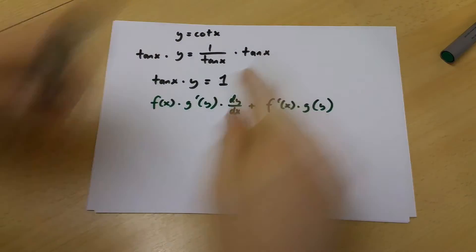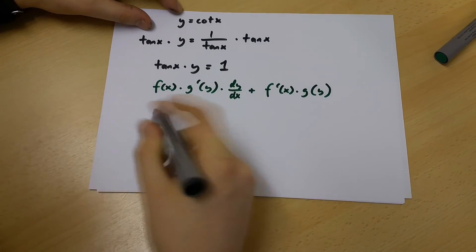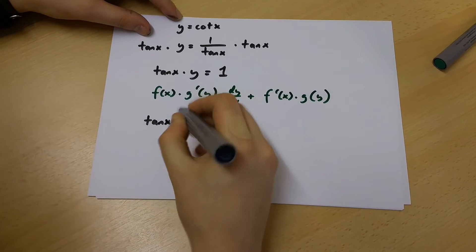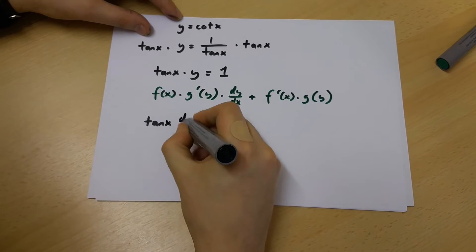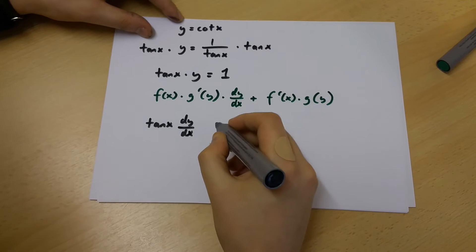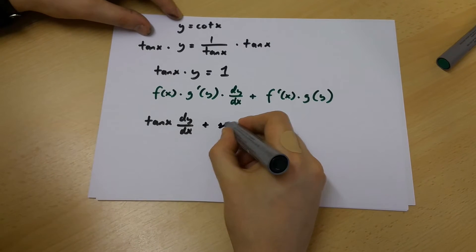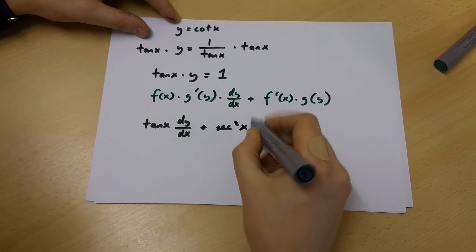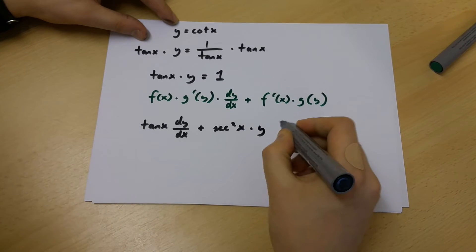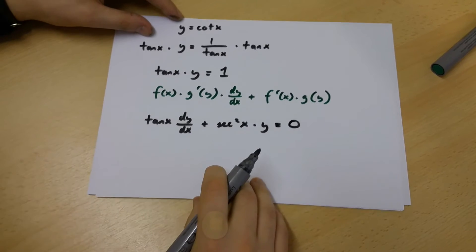If we use this formula we're going to get tan x multiplied by dy over dx plus sec x squared multiplied by y is equal to 0.